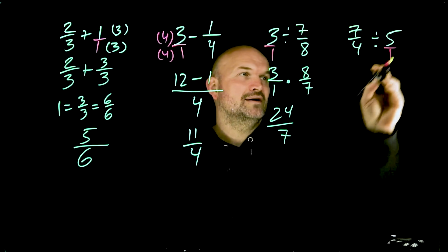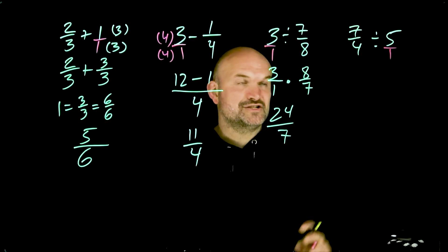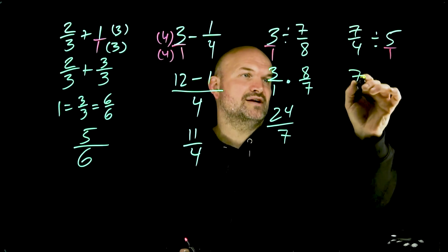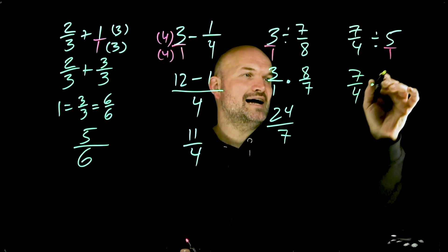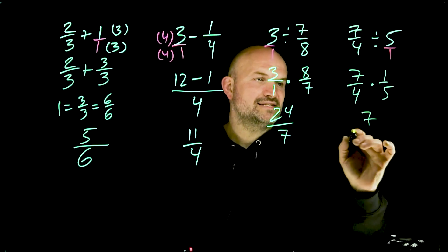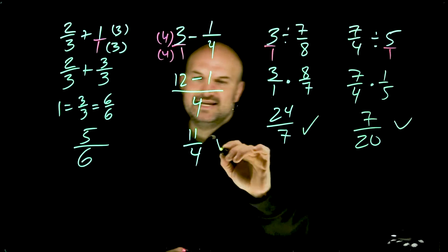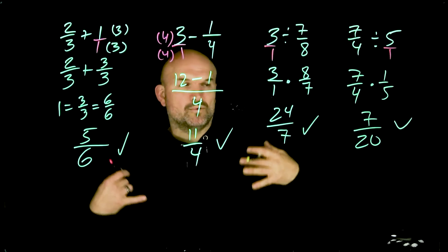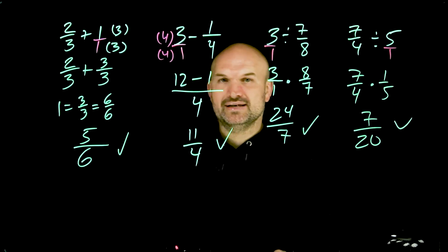So again, 7/4 ÷ 5, again, rewrite that as a fraction. Now rewrite as multiplication by taking the reciprocal of your divisor. So therefore it's going to be 7/4 × 1/5. Now I can multiply straight across and I get 7/20, but hopefully you guys can see that if you understand this stuff, I worked everything out and explained it, but the point where I want you to get to is where you can do it in your head.